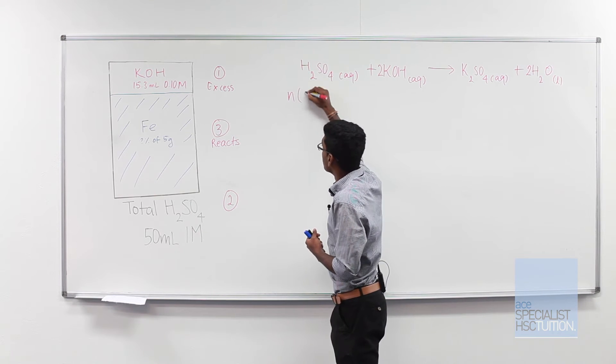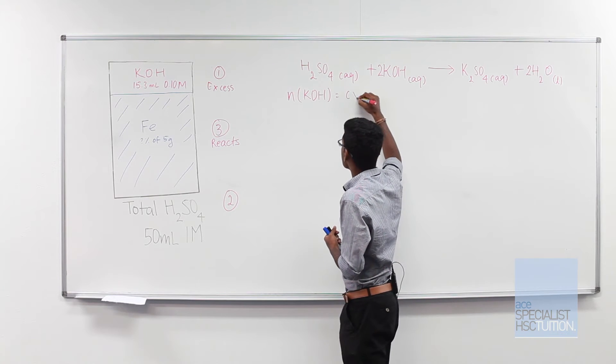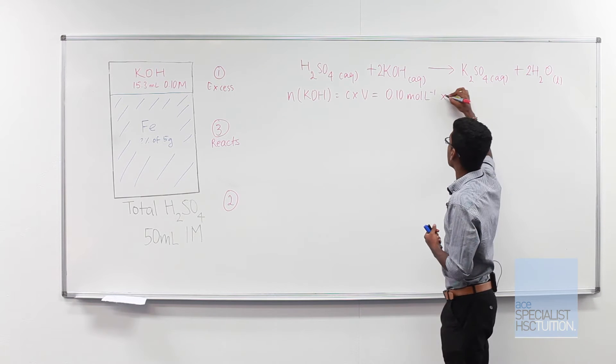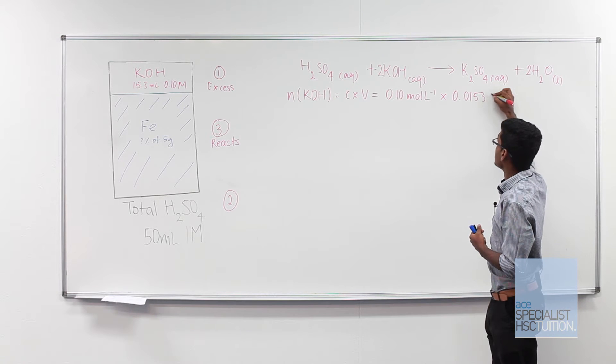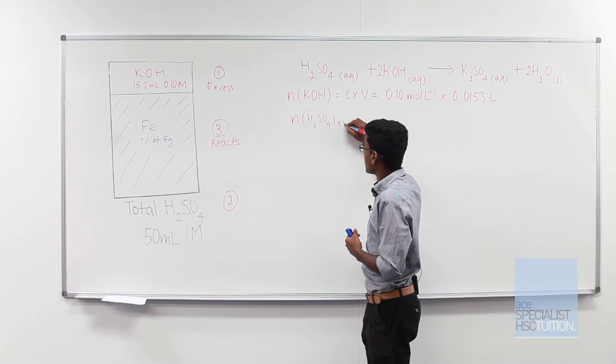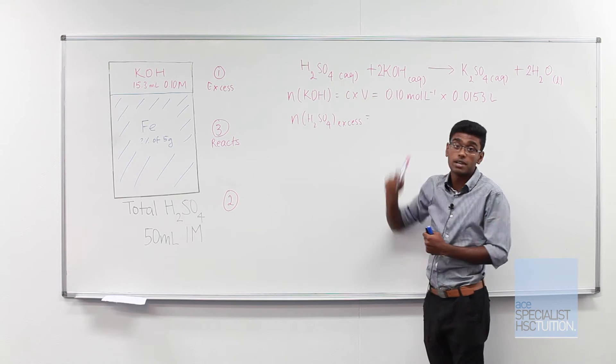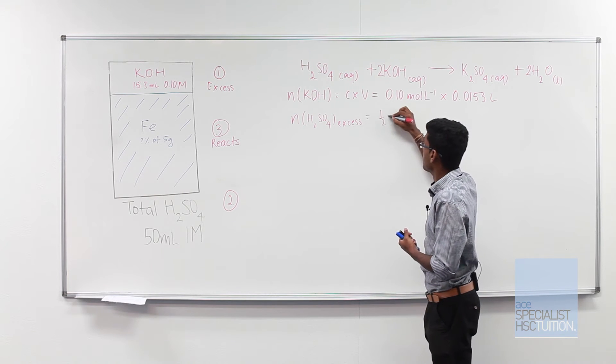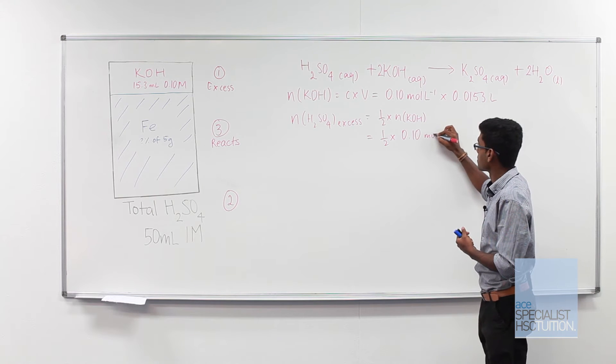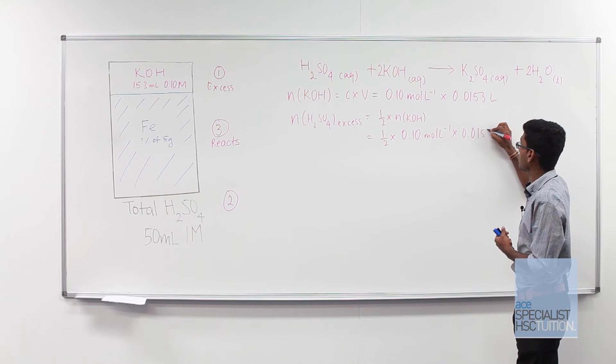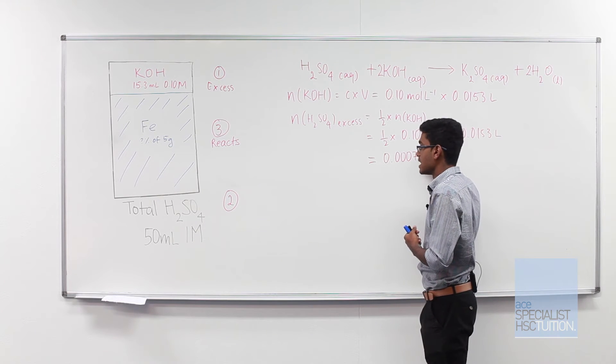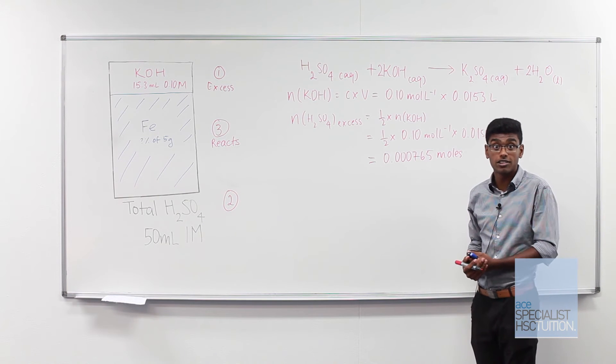So let's begin by working out the number of moles of potassium hydroxide using concentration times volume. We have 0.10 moles per liter multiplied by 0.0153 liters. We know that the number of moles of sulfuric acid in excess is half as much as the number of moles of potassium hydroxide. So we can say half times 0.10 moles per liter times 0.0153 liters. And that gives us a total value of 0.000765 moles. So that's how many moles of sulfuric acid we had in excess.